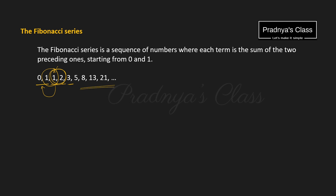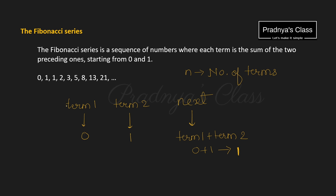Now it's time to understand the logic. We will directly initialize the first two terms. Let's take one variable term1 and initialize 0 to it. In the same way, we are going to take one more variable named term2 and initialize 1 to it. We know how to generate the next term of the series — by adding the previous two terms. So we will add term1 plus term2, which is nothing but 0 plus 1, so the next term will be 1.